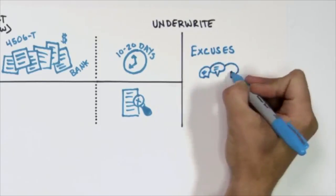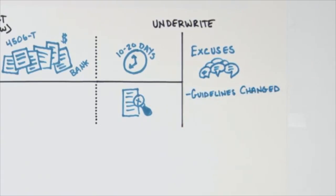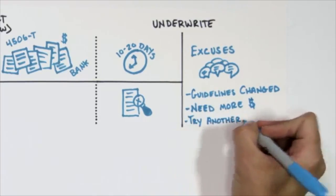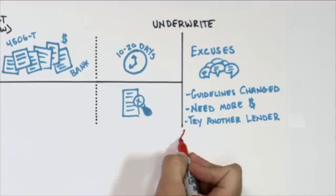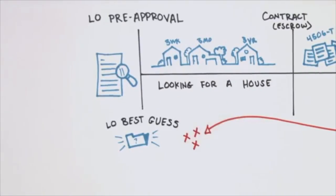Realtors have heard the excuses: the guidelines changed, we missed this and you need to put down more money, or let's try another lender and shop this over to another bank. All that really means is the good intentioned loan officer made a mistake that's now been caught by the underwriter.